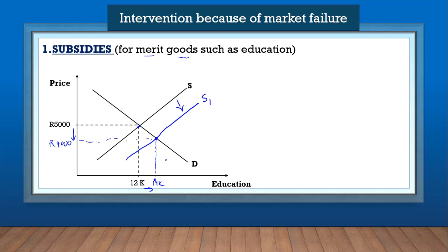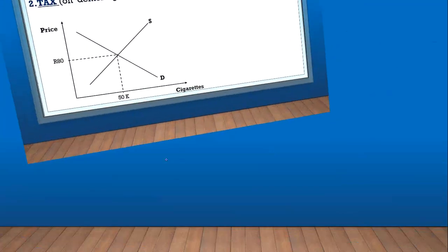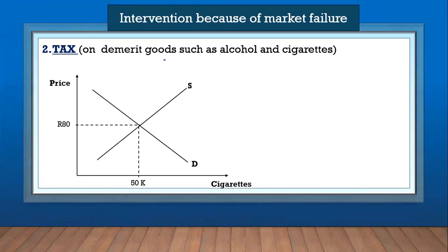For demerit goods — goods such as alcohol and cigarettes which are bad for society — the government can do the opposite: it can introduce a tax. What the tax will do is reduce the supply, because some suppliers don't want to pay the tax, so there will be less supply of these goods and the supply curve shifts from S to S1.